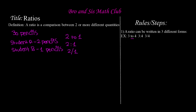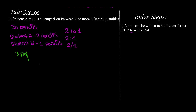Now, if we want to find how many pencils each student receives in total, we first figure out how many pencils are given per round. She gives two pencils to student A and one pencil to student B, so she gives three pencils per round. To find how many rounds it takes to give away all 30 pencils, we divide: 30 divided by 3 equals 10. So she gives pencils out in 10 rounds.